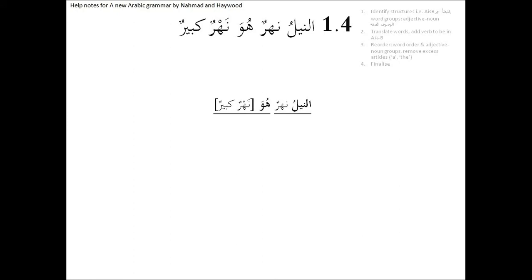Let's look at this sentence again. We need to identify the sentences that are inside. We can see أَنِّيلُ نَهْرٌ is one sentence, and هُوَ نَهْرٌ كَبِيرٌ is a second and separate sentence. Though logically they are related, we should consider them as separate.